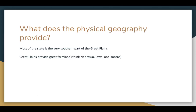Oklahoma's physical geography provides great farmland. Most of the state is in the very southern part of the Great Plains, which stretch from the Dakotas down to northern Oklahoma. We think of Nebraska, Iowa, and Kansas as the breadbasket of the United States, and Oklahoma is a part of that. Geographically speaking, Oklahoma is very similar to those surrounding states.